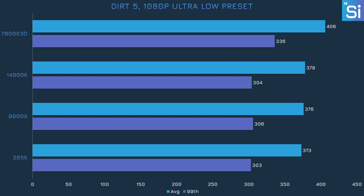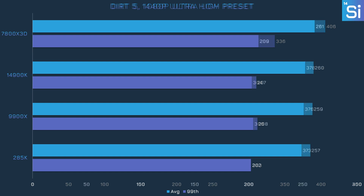In Dirt 5, the 7800X3D stands out as the only CPU to break into the 400s, while all the other chips perform pretty much identically. When the graphics are amped up, all CPUs perform the same, and it seems we're mostly or entirely GPU bottlenecked.